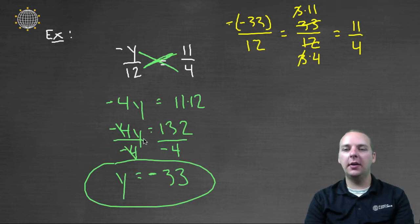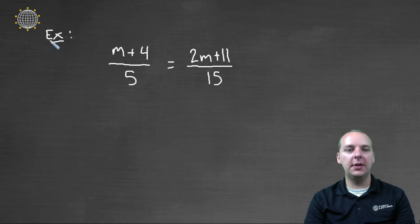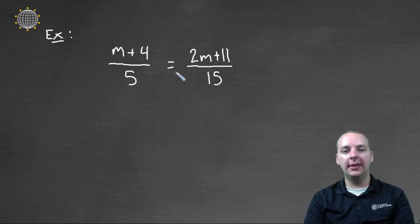Now let's take a look at our next example, our last example, we have m plus four over five is equivalent to two m plus eleven over fifteen. One ratio set equal to another, this is called a proportion. Again, we're going to use cross multiplication to solve this.